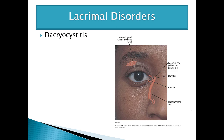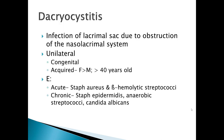The lacrimal glands are within the bony orbit at the upper outer edge just below the eyebrow. Tears cover the eye and are drained by the puncta, then go through the canaliculi and into the lacrimal sac, and then out the nasolacrimal duct.